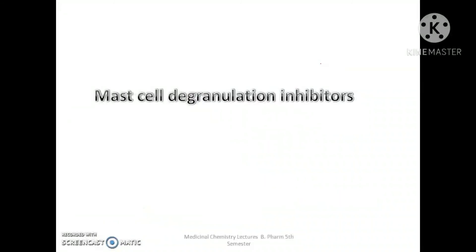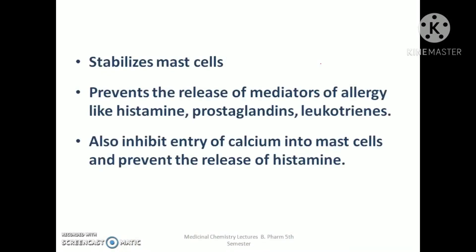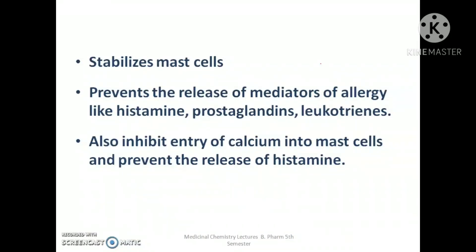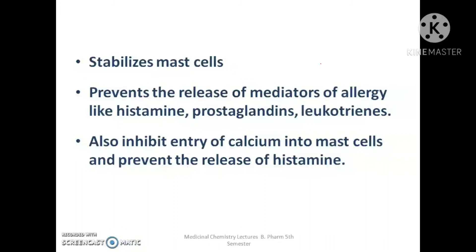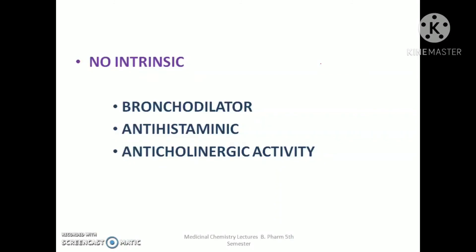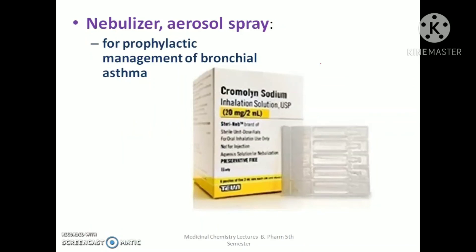Cromolyn sodium is a mast cell degranulation inhibitor — it stabilizes mast cells and prevents the release of mediators of allergy like histamine, prostaglandins, and leukotrienes from the mast cells. It also inhibits the entry of calcium into mast cells, thereby preventing histamine release. It does not have any intrinsic bronchodilator, antihistaminic, or anticholinergic activity — it solely prevents the release of histamine from mast cells. It is used for treatment of complications arising from excessive release of histamine and is highly water-soluble.